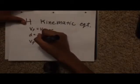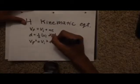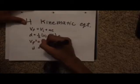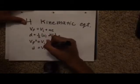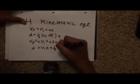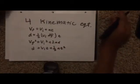The third one is final velocity squared equals initial velocity squared plus two times acceleration times distance. And the last one is distance equals initial velocity times time plus one-half the acceleration times time squared.